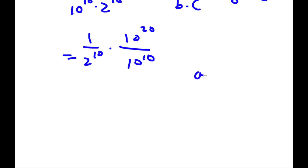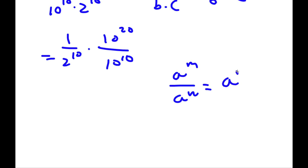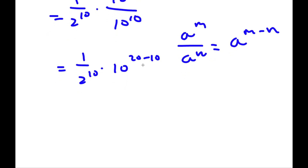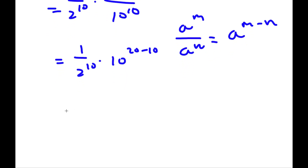Now if I have something in the form a to the power of m over a to the power of n, this is equal to a to the power of m minus n. So 10 to the power of 20 over 10 to the power of 10 is going to equal 10 to the power of 20 minus 10. And 20 minus 10 is 10, so I have 1 over 2 to the power of 10 times 10 to the power of 10.